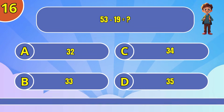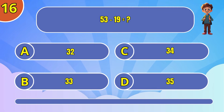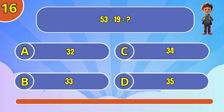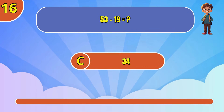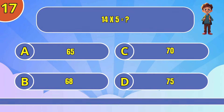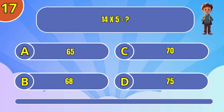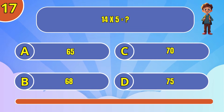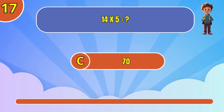What is 53 minus 19? The answer is 34. What is 14 times 5? The answer is 70.